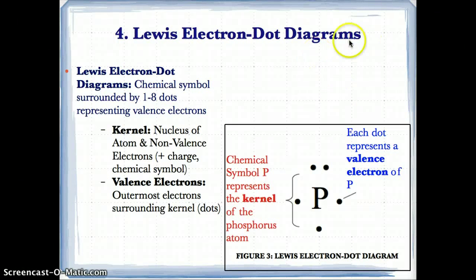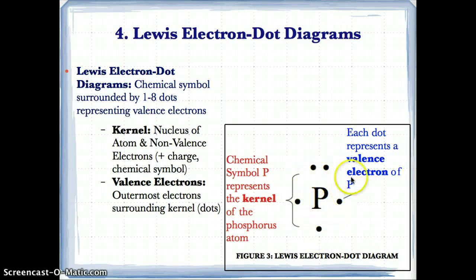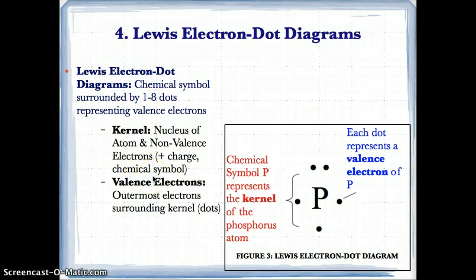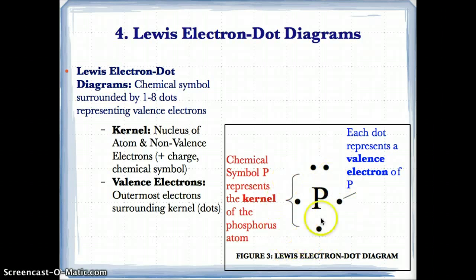Now that we know about valence electrons, we have to show them by drawing what's called Lewis electron dot diagrams. Lewis electron dot diagrams show the chemical symbol surrounded by one to eight dots representing valence electrons. The chemical symbol represents something called a kernel, which represents the nucleus of the atom and the inner or non-valence electrons — everything but the last level. The dots around it represent the valence electrons, which are the outermost electrons around the kernel. For P, there are 5 valence electrons because there are 5 electrons in the last level, so you draw 5 electrons around it.